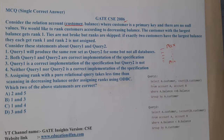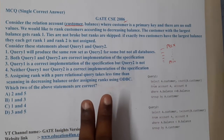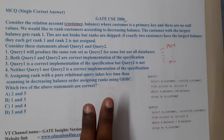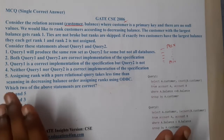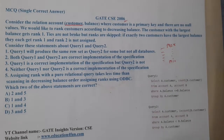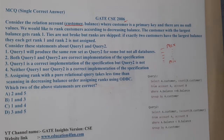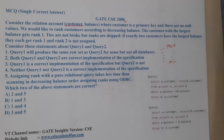So if exactly two customers share the largest balance, each gets rank one and rank two is not assigned at all. They gave two queries. Option one says query one will produce the same row set as query two for some but not all databases — meaning both can give different outputs.